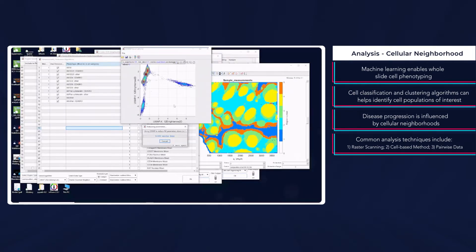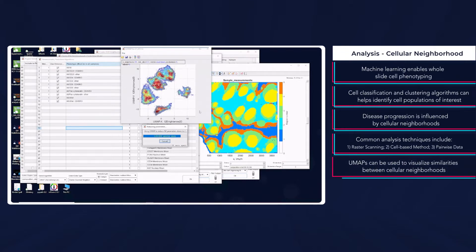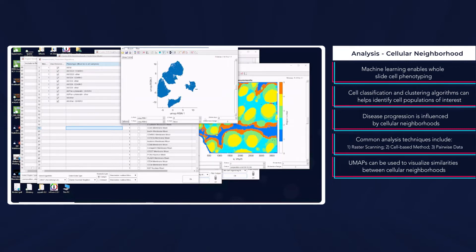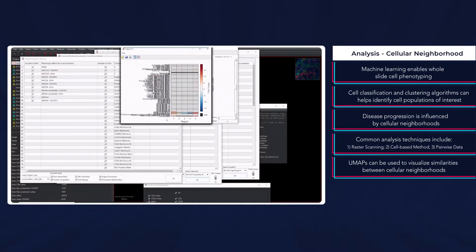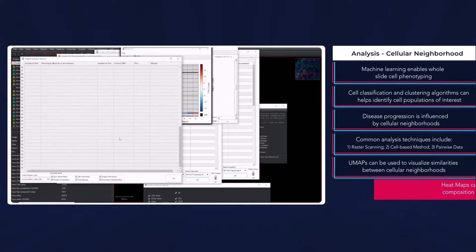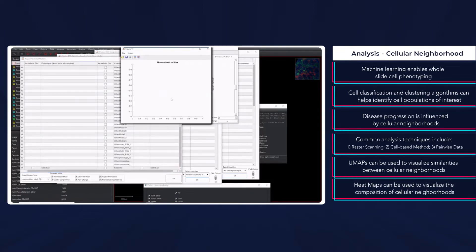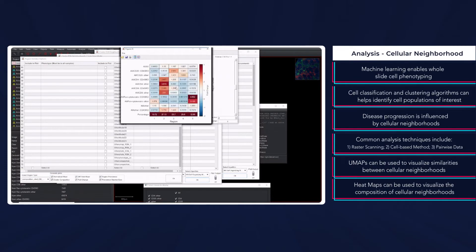To better understand how cellular neighborhoods interact and communicate, several techniques are available. One being UMAPS, which is a dimensionality reduction technique that shows the co-localization of cells and indicates the similarities between cellular neighborhoods. Another is heat maps, which show the composition of cellular neighborhoods.